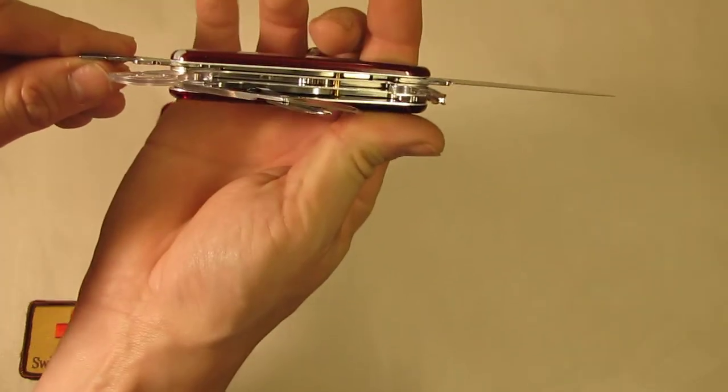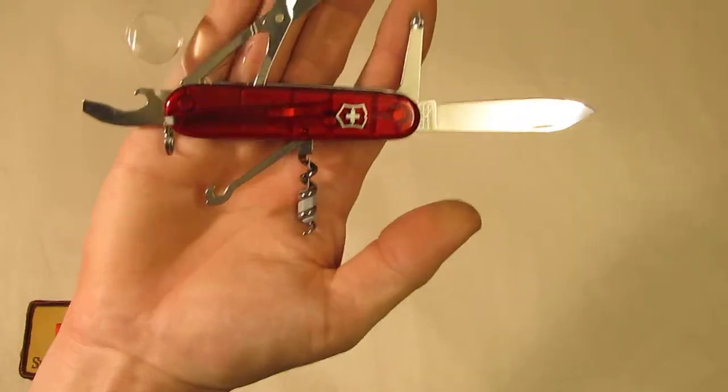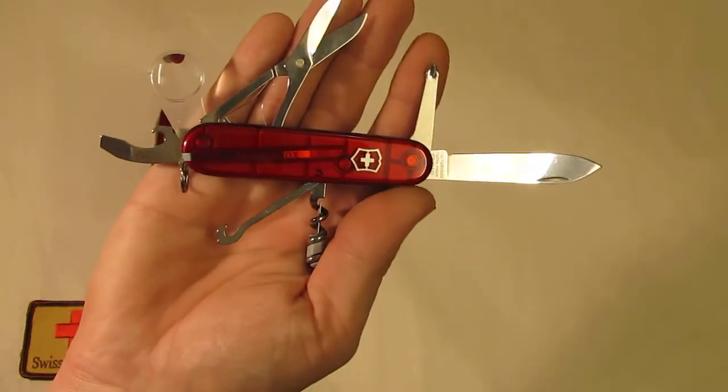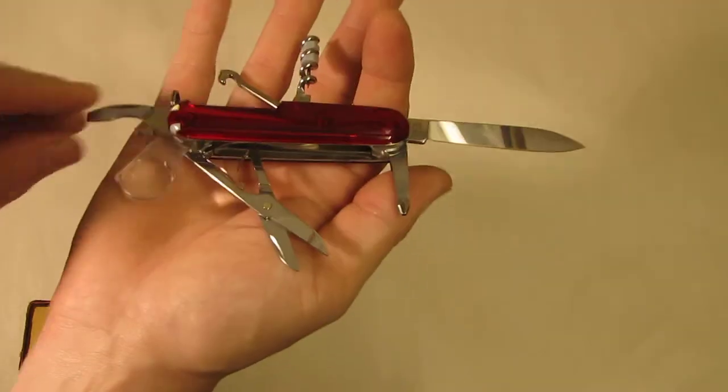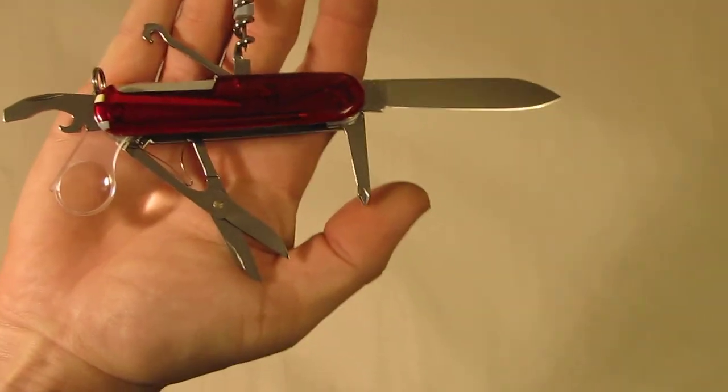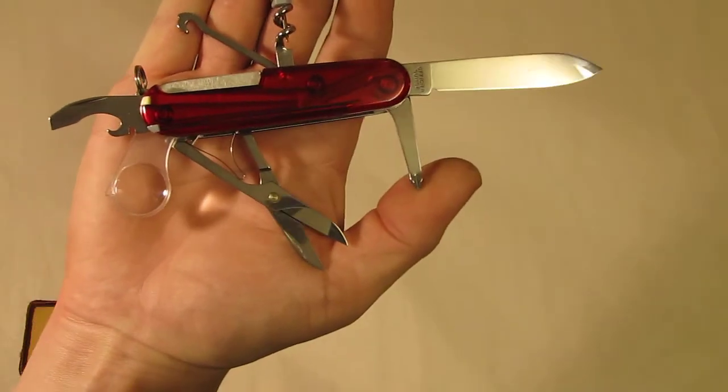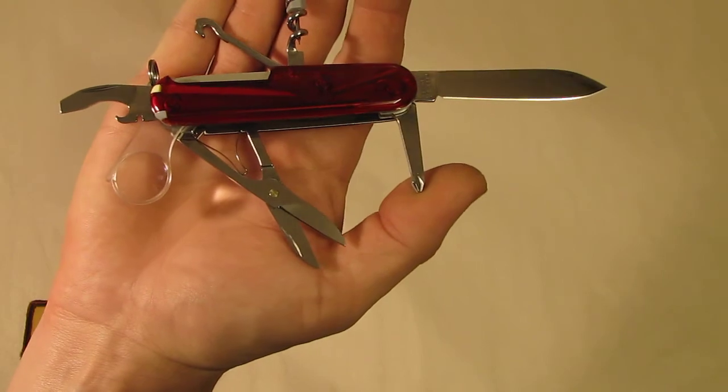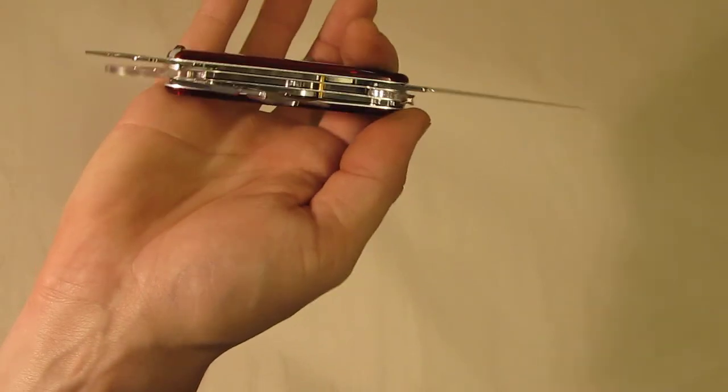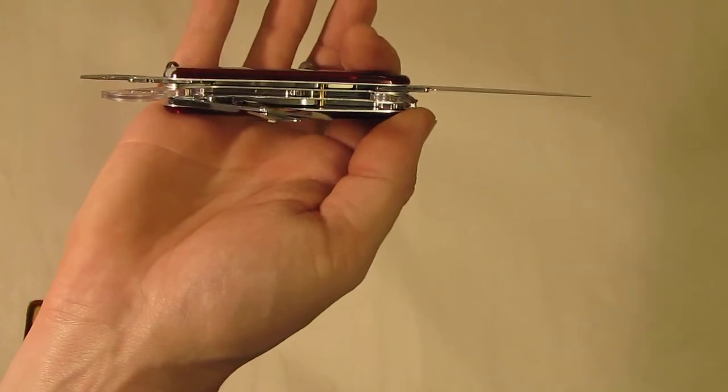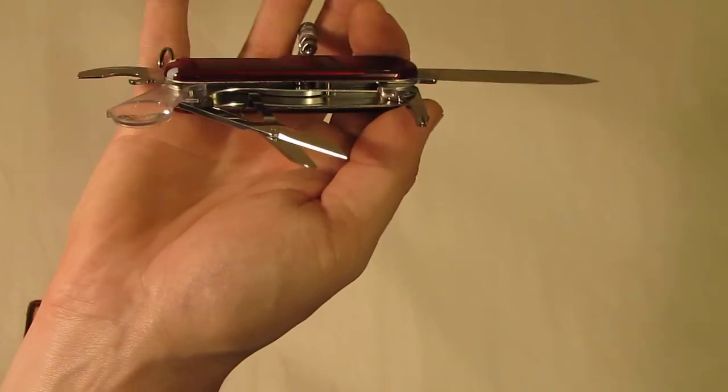On the last layer we have the scissors, the big scissors. That comes always handy. Scissors are quite likely one of the most wanted features next to the main blade and maybe the wood saw. So we have this tool in a compact three layer frame.